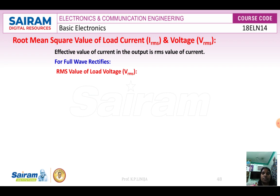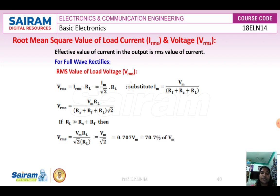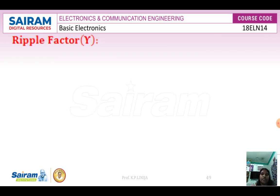For load voltage of the full wave rectifier, once you know the formulas it is straightforward to substitute and find the answer. The condition to apply is that load resistance RL is very much greater than RS plus RF. Based on the topics discussed, an expected exam question would be: explain the working of a full wave rectifier using two diodes with a neat diagram, and also derive the expression for IDC and IRMS. Next, let us discuss the ripple factor.